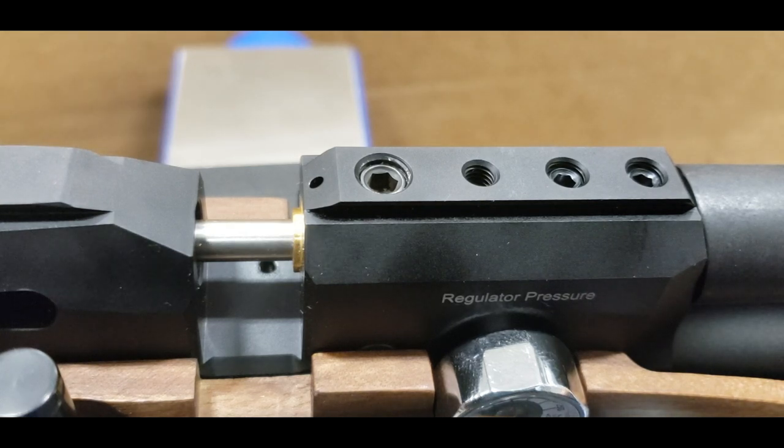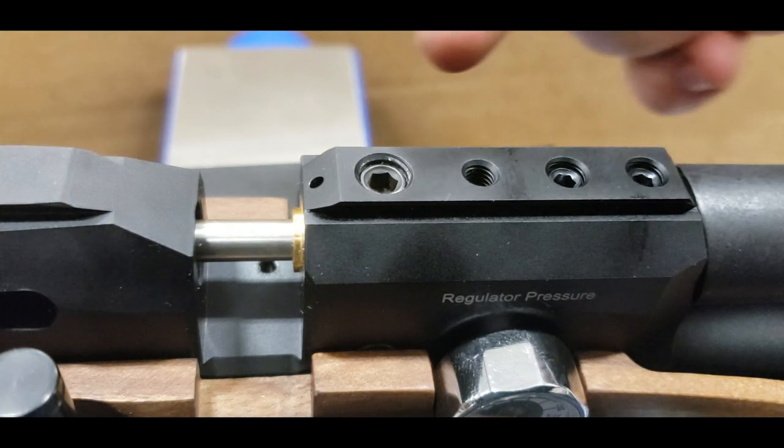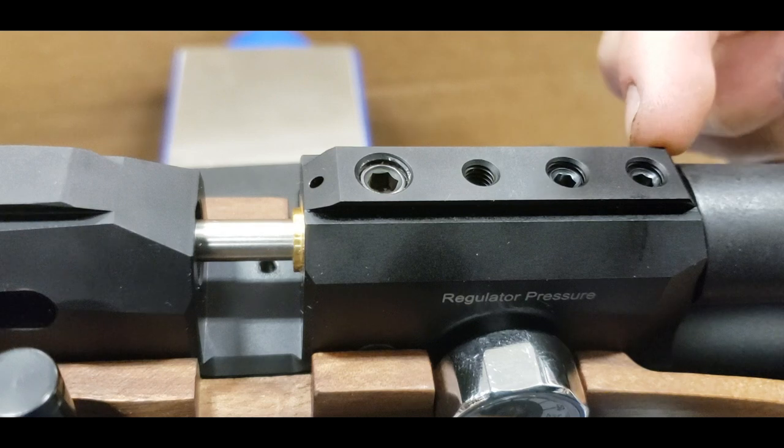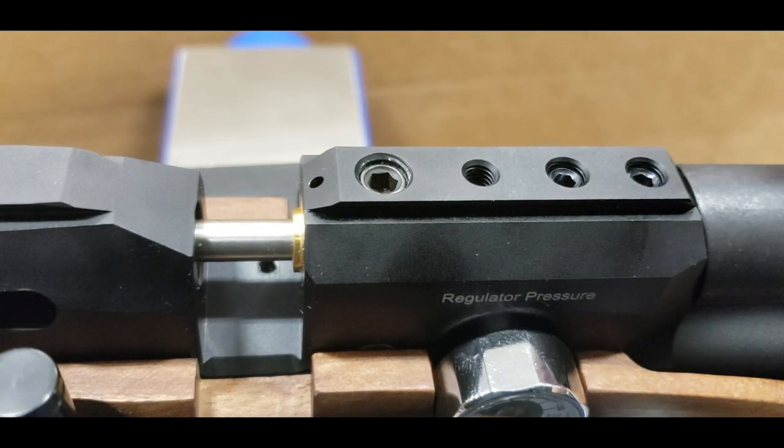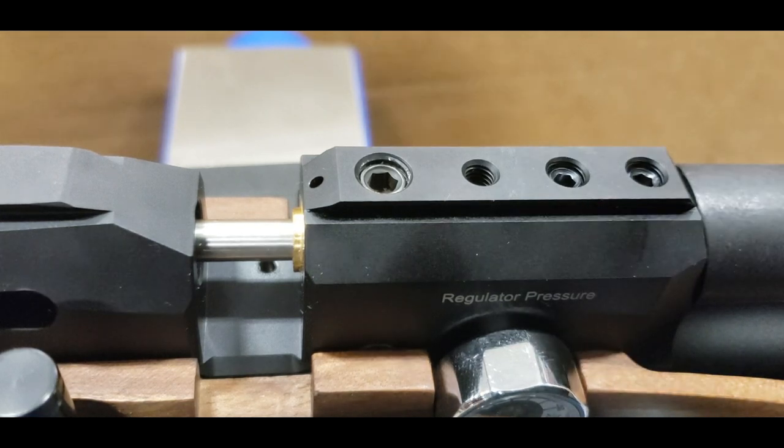Okay, so we have the Dreamline Classic here. There are three screws up top to remove the barrel. I've shown this in the Dreamline disassembly and reassembly, but we're gonna go over it again just for the barrel series.